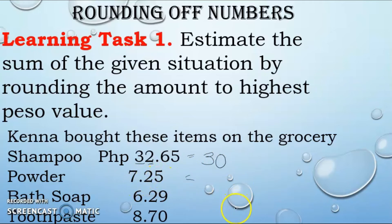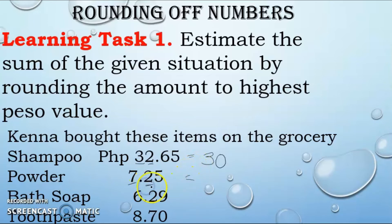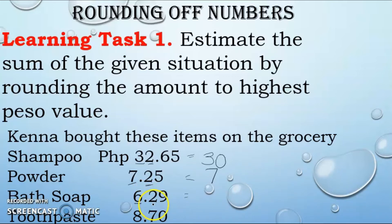For 7 pesos and 25 centavos, our rounding place is 7 and the digit to the right is 2. Since 2 is less than 5, we do not add anything — it stays as 7 pesos. Next, for 6 pesos and some centavos, 6 is the rounding place and the digit to the right is 2, which is also less than 5, so we are not going to add anything — it remains 6.